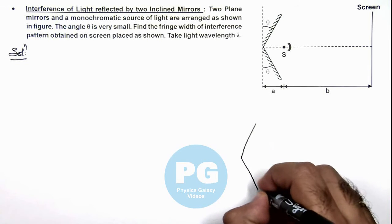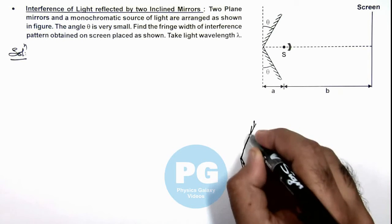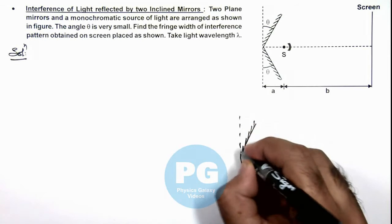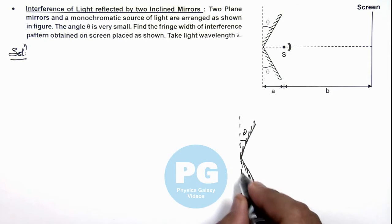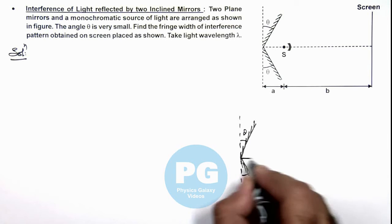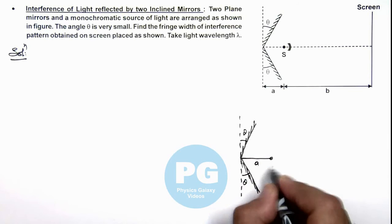We are given with two inclined plane mirrors shown here, and from vertical both of these mirrors are inclined at an angle theta and theta. At a distance a, we have placed a source.